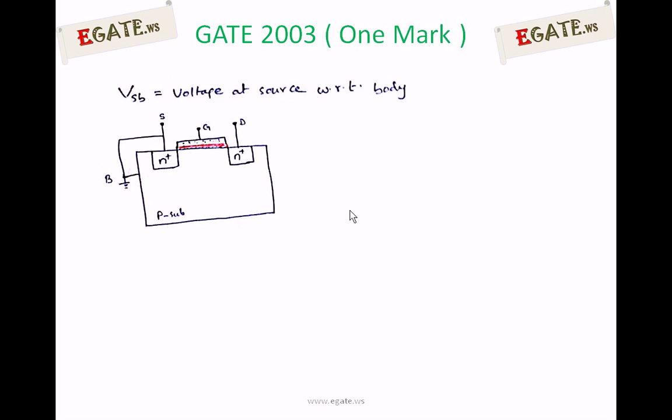This is a general block diagram of n-channel MOSFET. Generally, source and substrate are shorted together and connected to ground. In case of n-channel MOSFET and in case of p-channel, source and bulk are shorted and connected to VDD. Before proceeding, we should know the definition of threshold voltage.